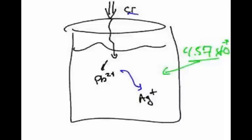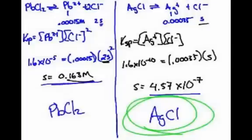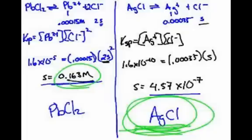The lead is not going to form until you get it to 0.163. So therefore, the silver will form first. All right, the silver chloride will form first. Okay.